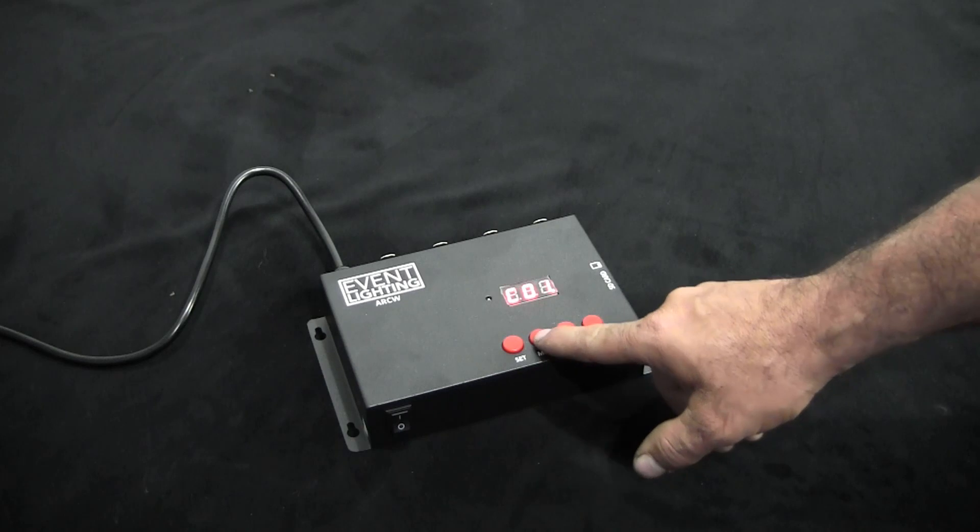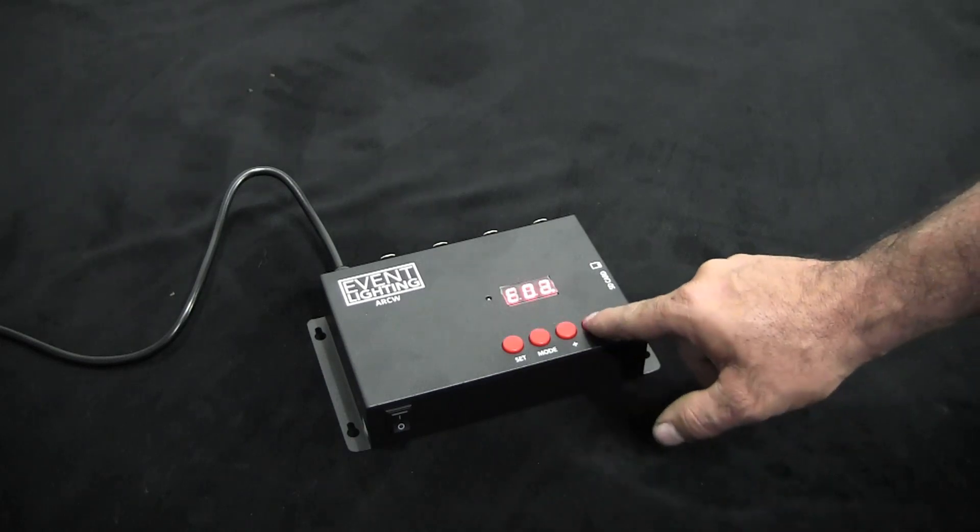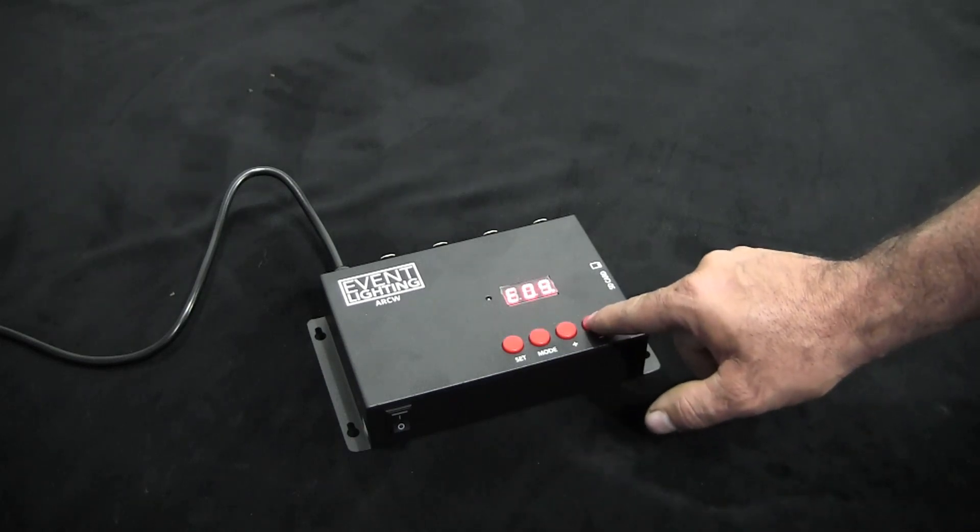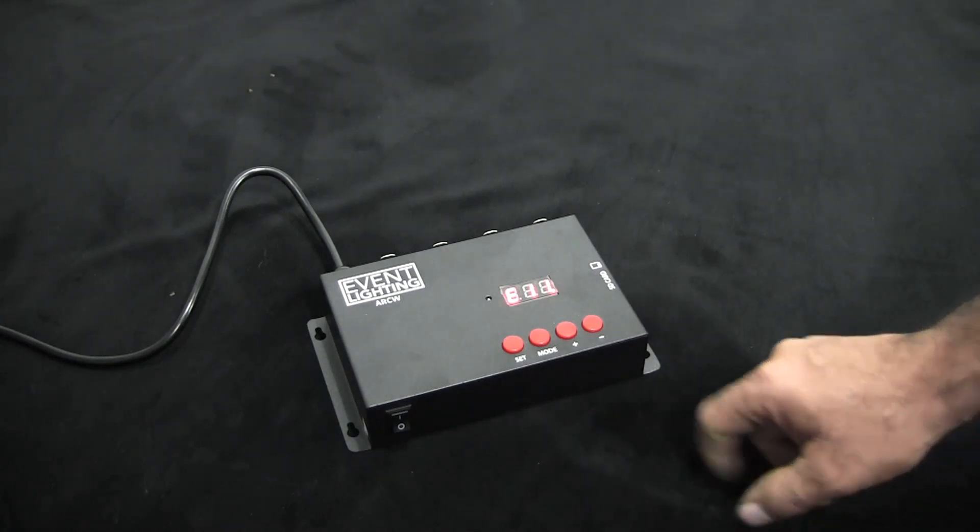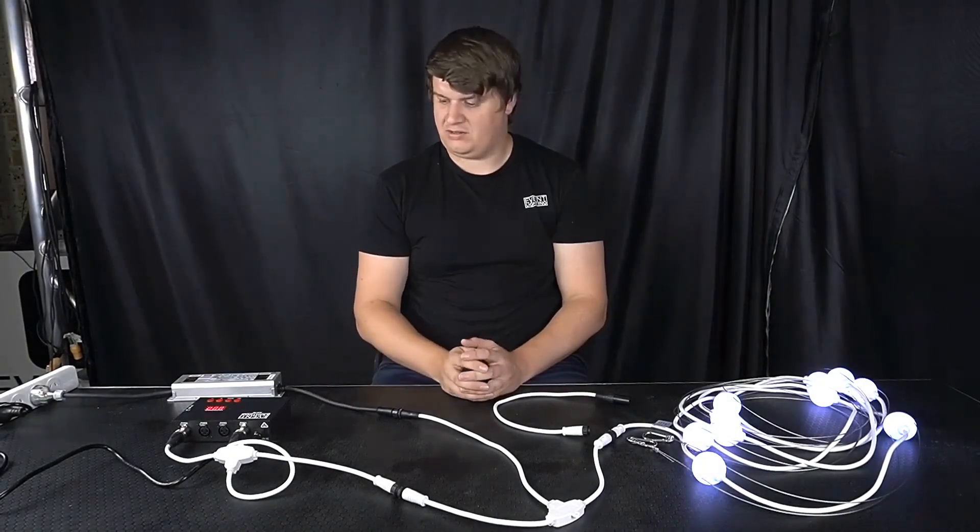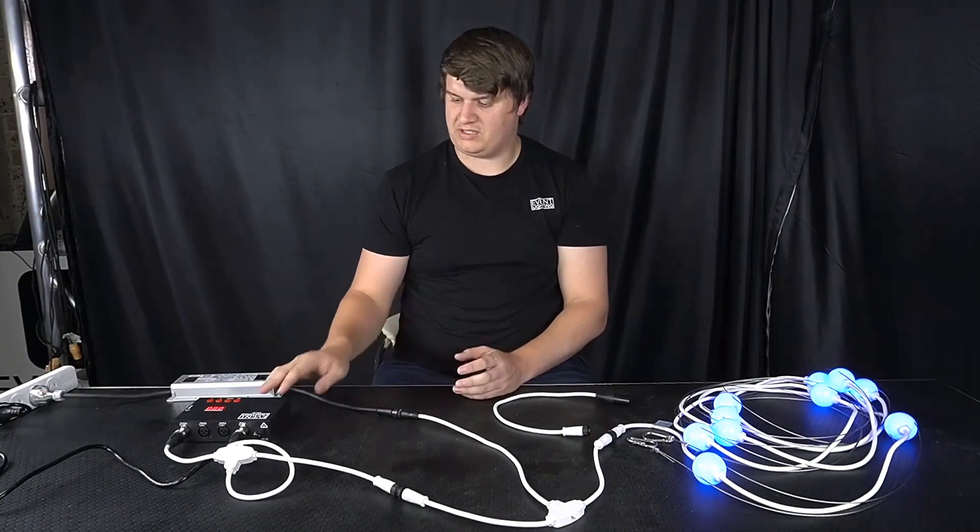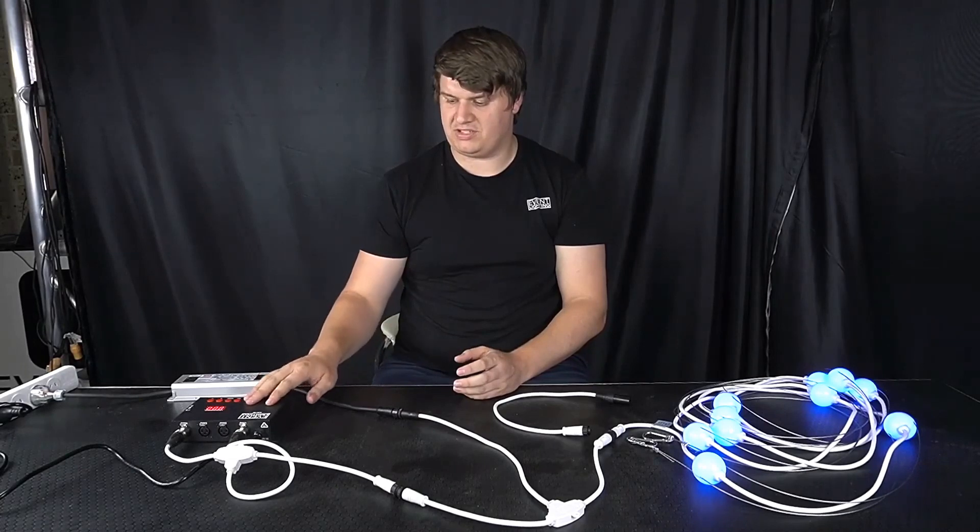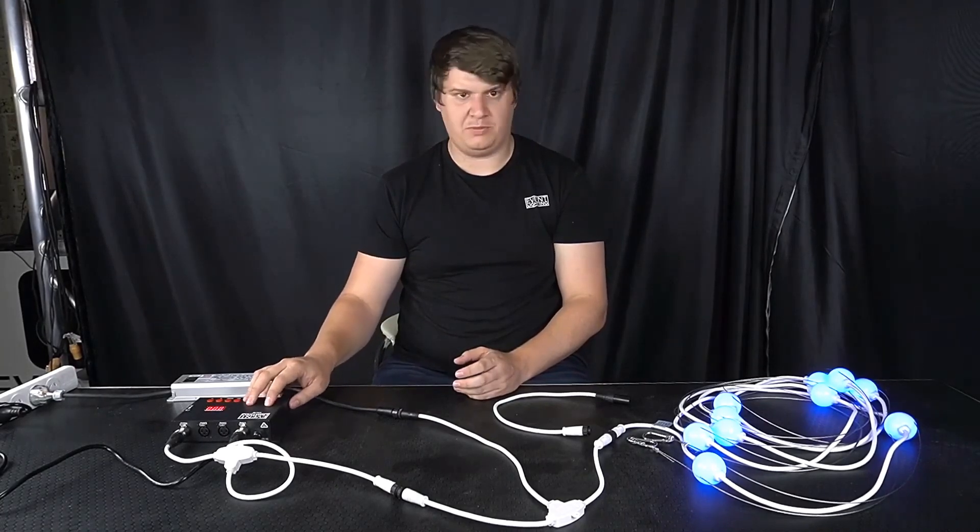So to program them we need to go to E, set our starting position so ball number 11 and press set. And it's going to run through and then the balls will flash. We're just going to see the ArcW go through its process. At the end of it you'll end up back at the menu and they'll be freshly addressed.